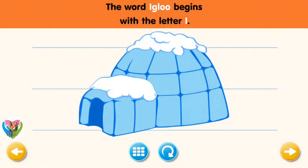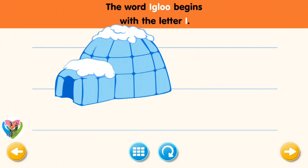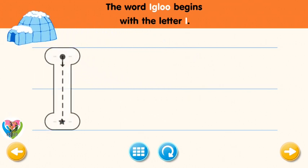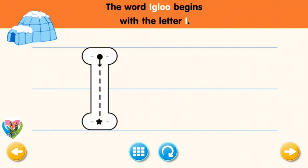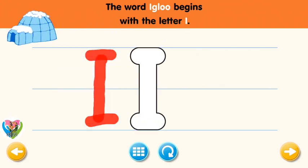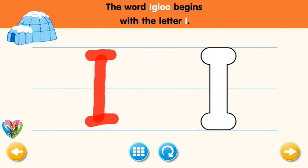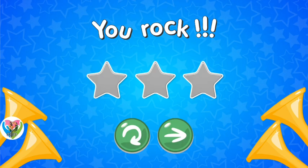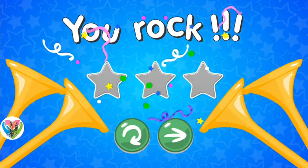The word igloo begins with the letter I. Trace the letter I. Connect the dot and the star with a line. You rock! Now write the letter I yourself. You rock!